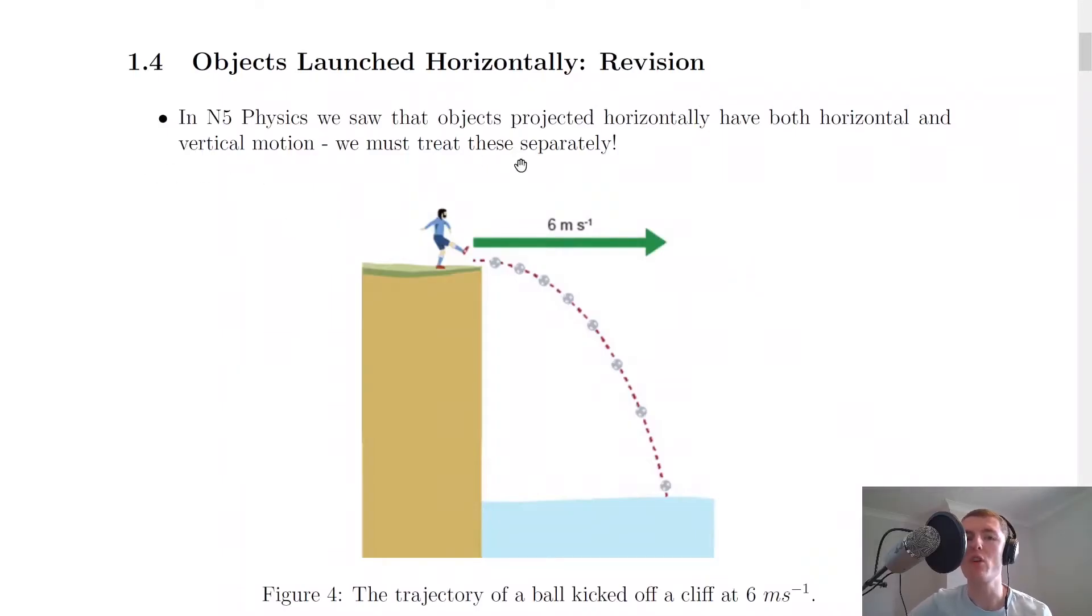In National 5 Physics we saw that objects projected horizontally have both horizontal and vertical motion. We must treat these separately. So this was the key idea to attempting projectile problems at National 5 level, where we have to split the motion into horizontal and vertical components.